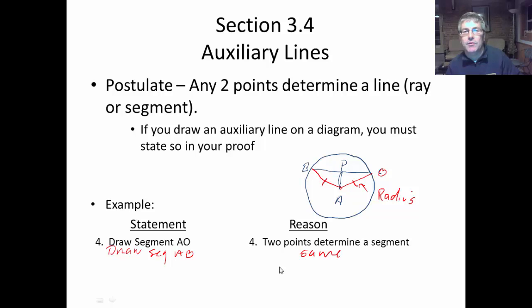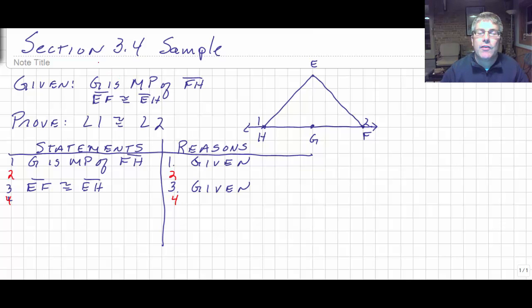From here, we'll move on to some sample problems. So here's our sample problem for our lesson on altitudes, medians, and auxiliary lines. We're given G is the midpoint of FH. And we get EF is congruent to EH. And we want to prove that angle one, this angle out here, is congruent to angle two.